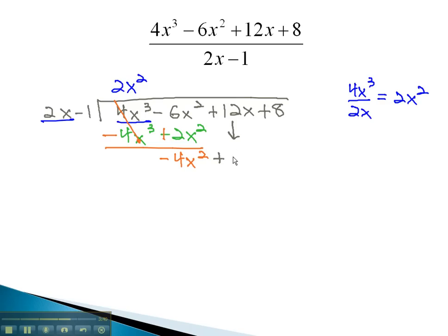Bring down the next term, the positive 12x, and repeat the process, dividing negative 4x squared by 2x. This reduces to negative 2x.